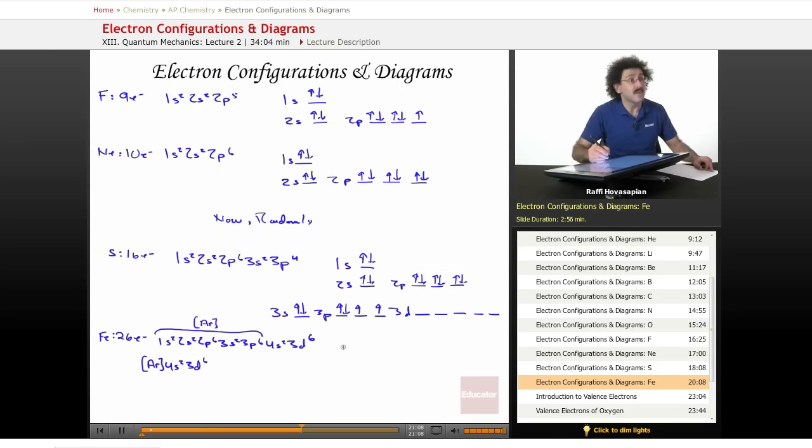Okay. So we have 1s. Let's see here. Yes. We have a 1s orbital. We have a 2s orbital. We have 3 2p orbitals. We have a 3s orbital.